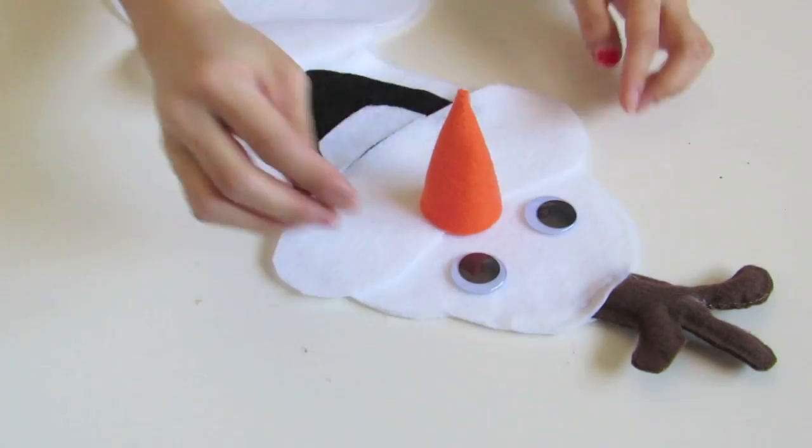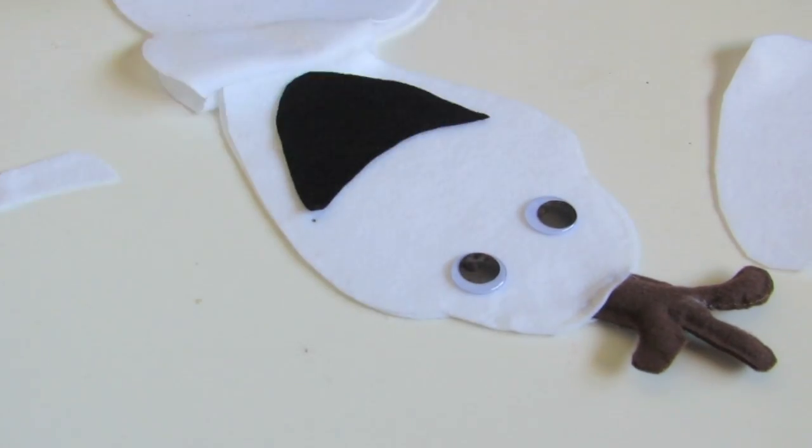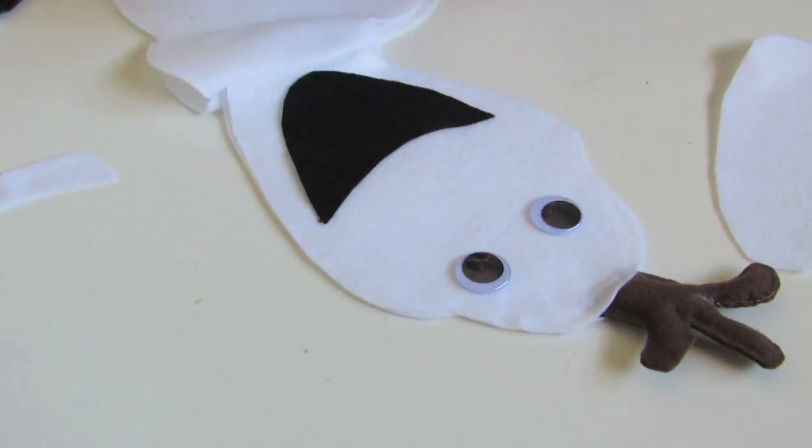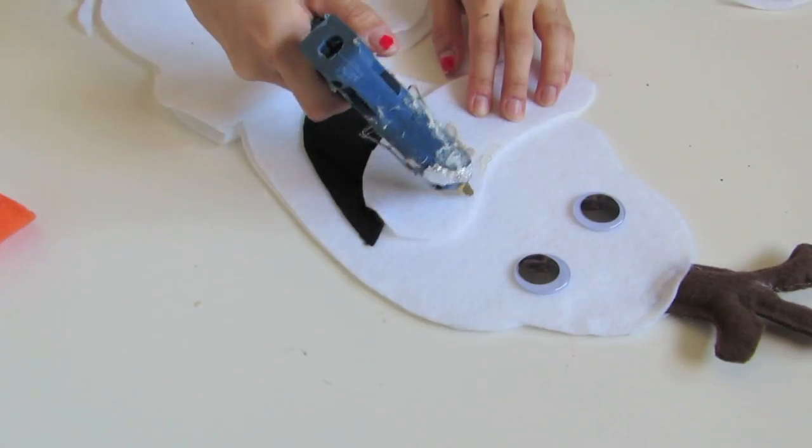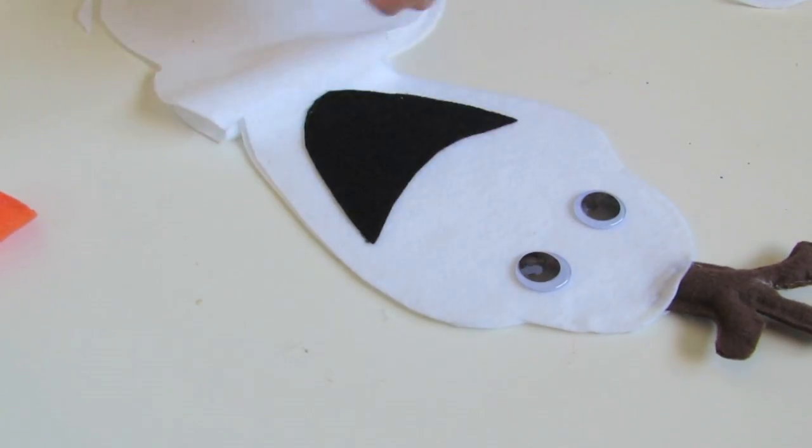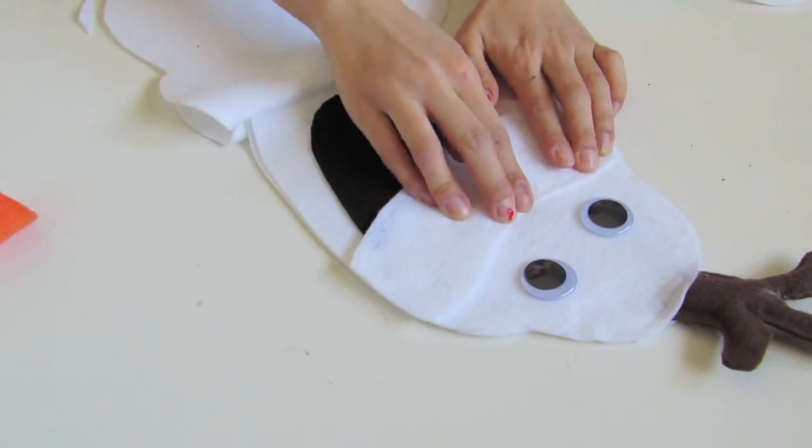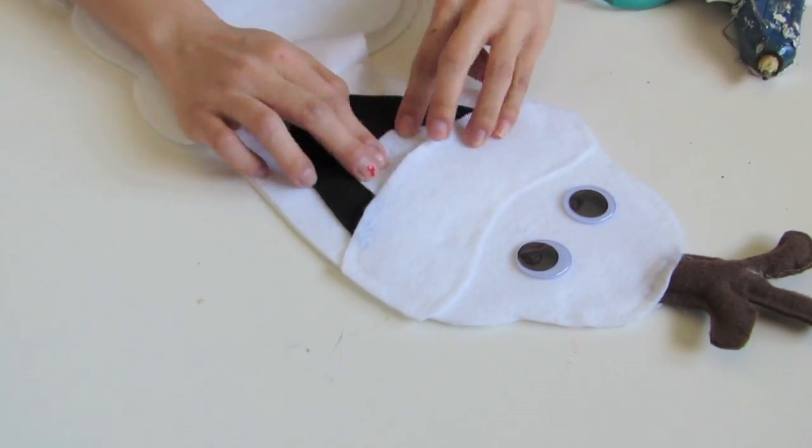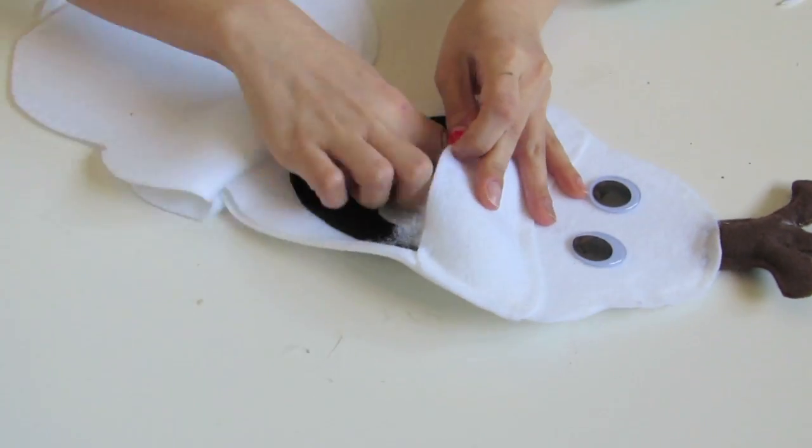And then we want to start off by gluing on that little black part of the mouth. Just kind of trace where it will go and then glue that on. And then next we're going to be gluing on this white part which is supposed to give him more of a 3D face shape so that it's not so flat.